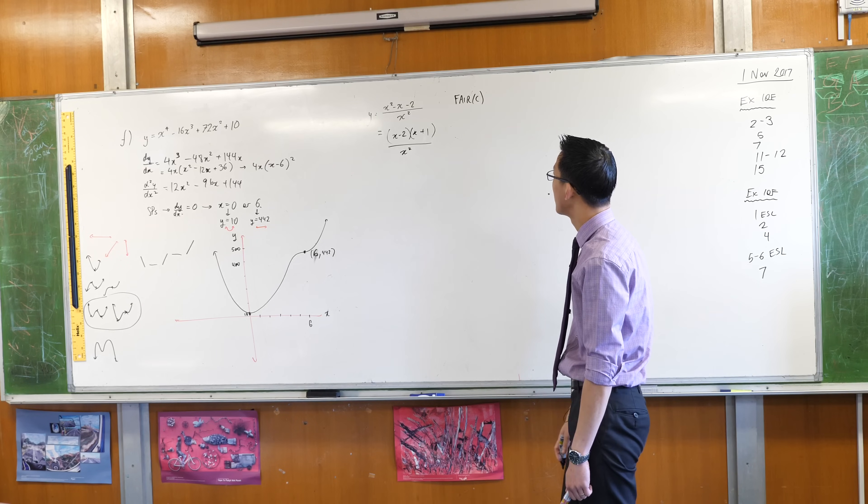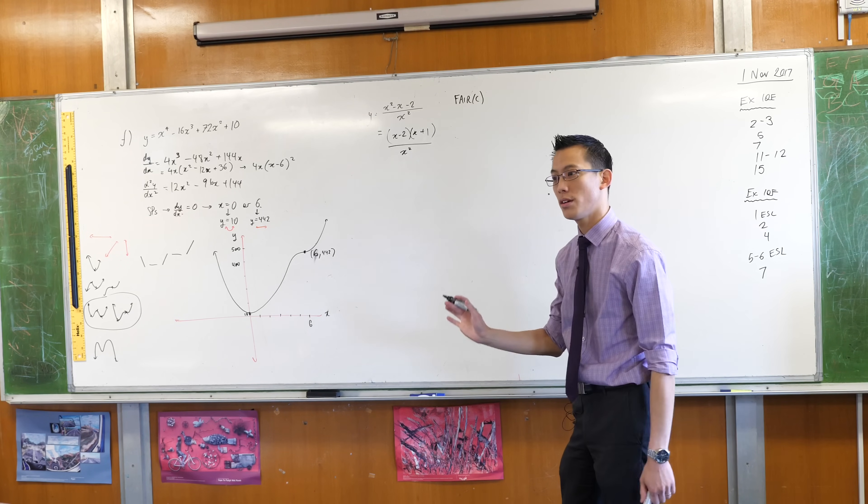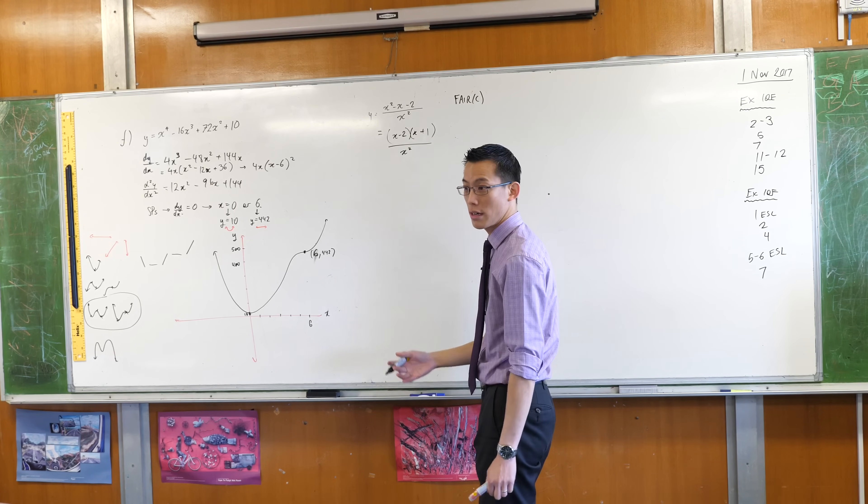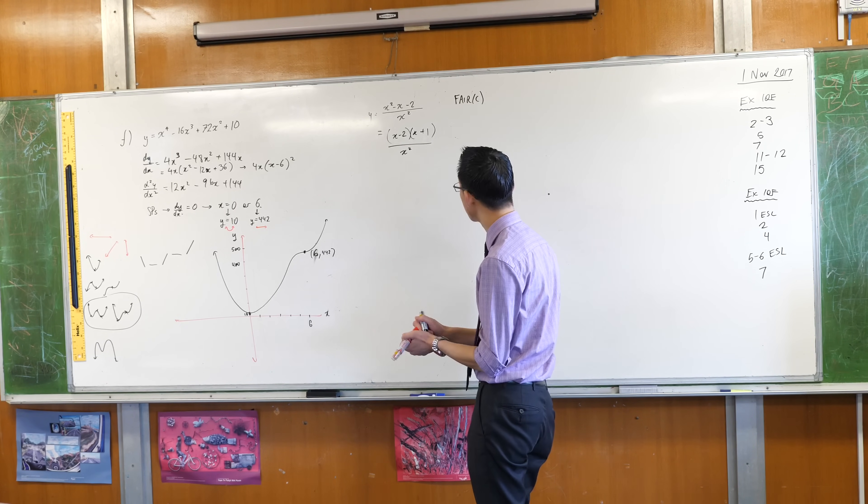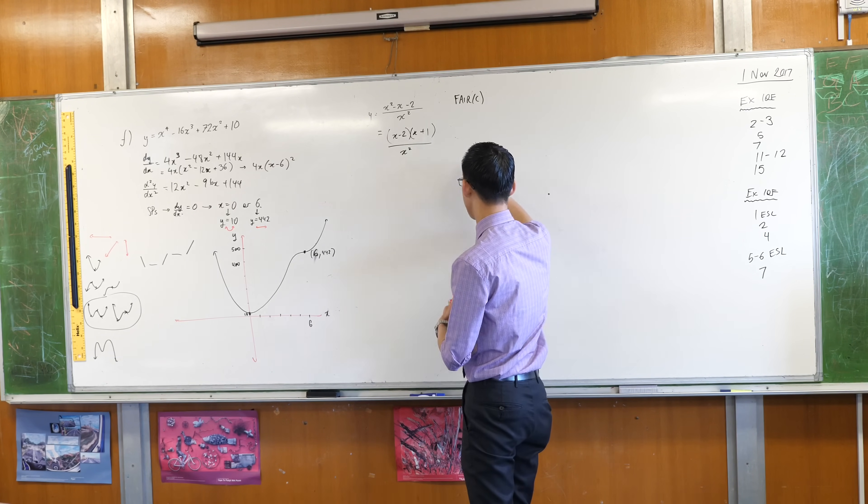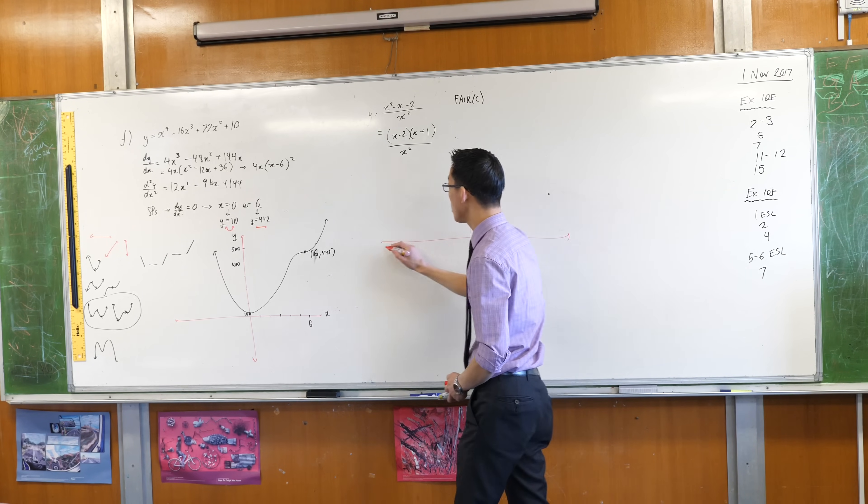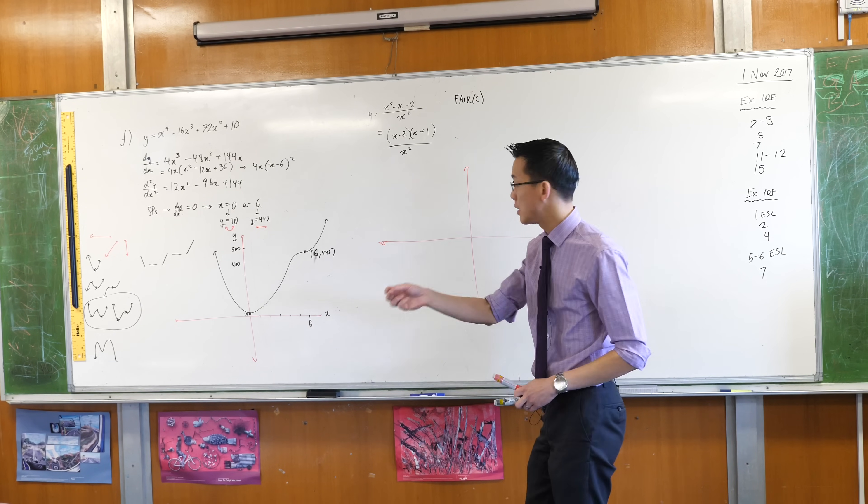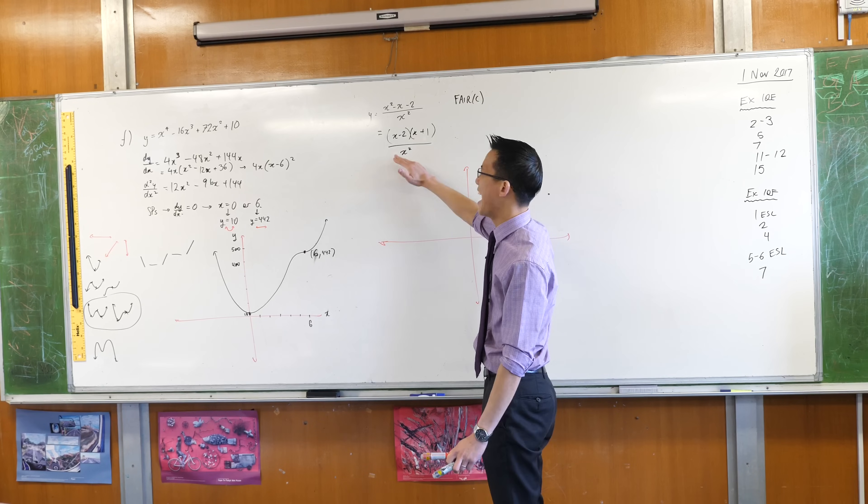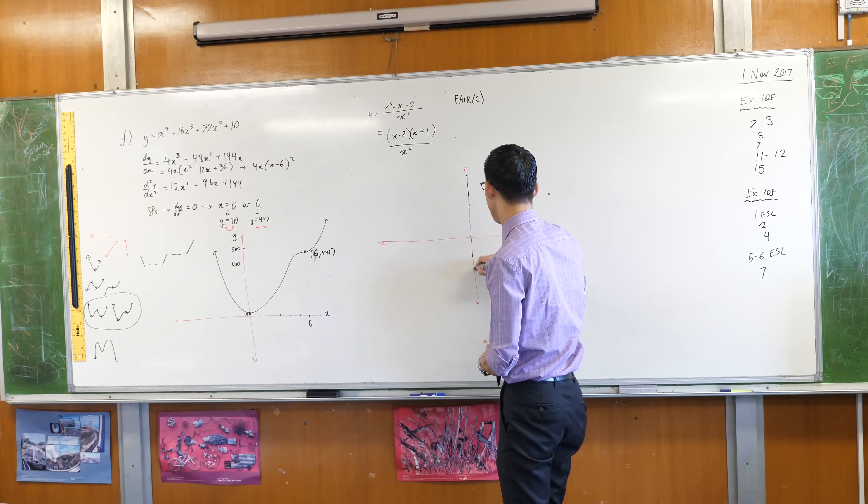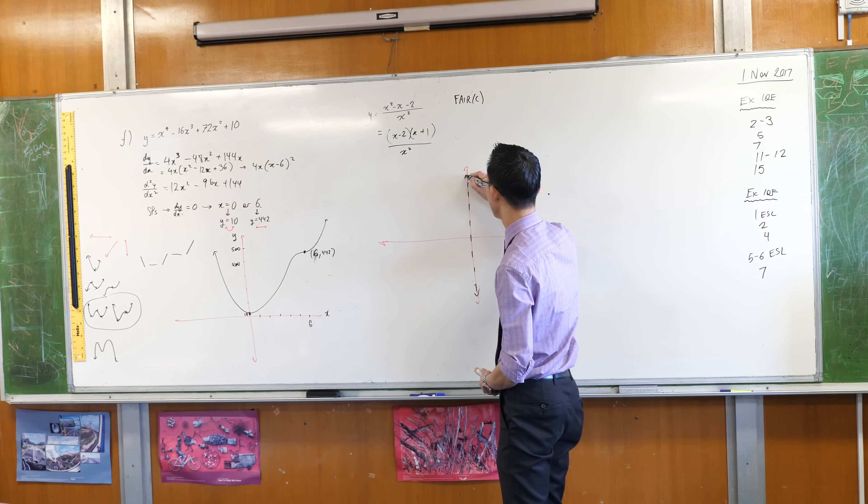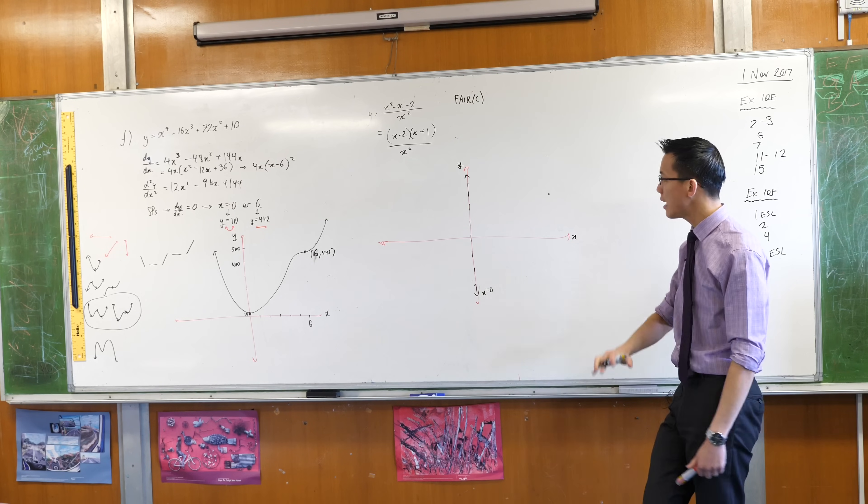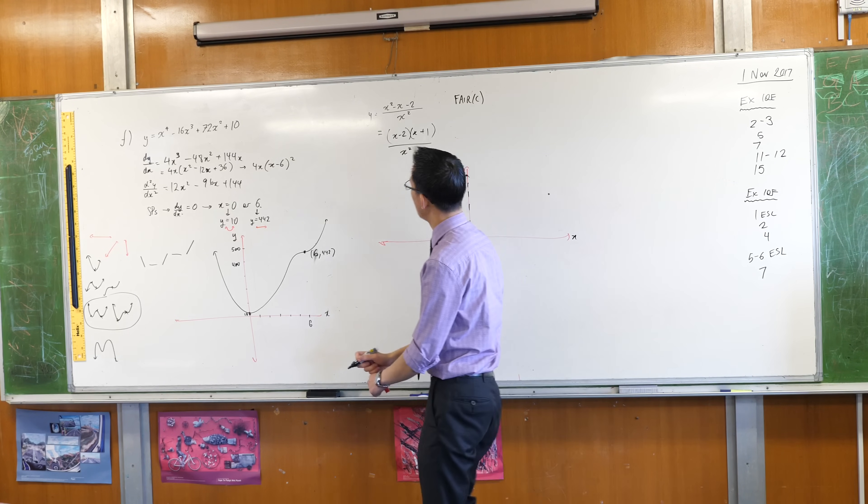Having factorized, I can use that to work out the asymptotes and the intercepts. Firstly, the vertical asymptotes. I can see that there's going to be a single vertical asymptote. Let's be a little more specific. It's a vertical asymptote, so it's actually X equals 0. I'm going to put that on and label it. This is the Y axis, X equals 0. Got that guy. No other vertical asymptotes.